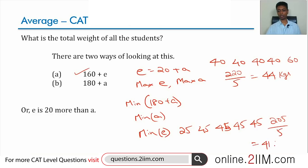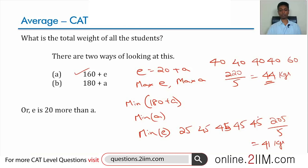The total is 45×4 plus 25, which is 205, and 205 divided by 5 is 41 kilograms. So the maximum possible average is 44 — when weights are 40, 40, 40, 40, 60 — and the minimum possible average is 41 — when weights are 25, 45, 45, 45, 45. The difference between maximum and minimum is 44 minus 41, which is 3 kilograms.